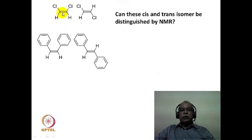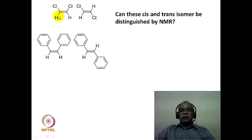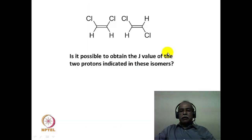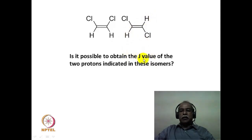What about the cis and trans dichloro derivatives? In the case of phenyl derivatives we used the anisotropic and ring current effect, but such a facility does not exist for the dichloro derivative. Can one get the J value between these two hydrogens which are apparently not coupled to each other? Is it possible to obtain the coupling constant between the two protons in these isomers where there is apparently no coupling? This is the question we are addressing.